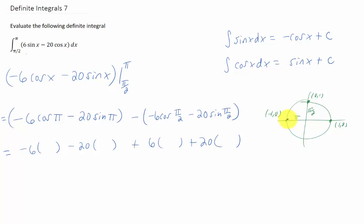Cosine of pi is just the x value at this point right here, which is negative one. Sine of pi would be the y value at this point, which is zero.